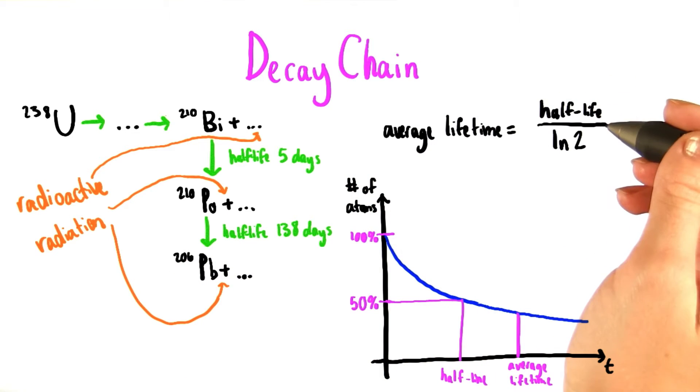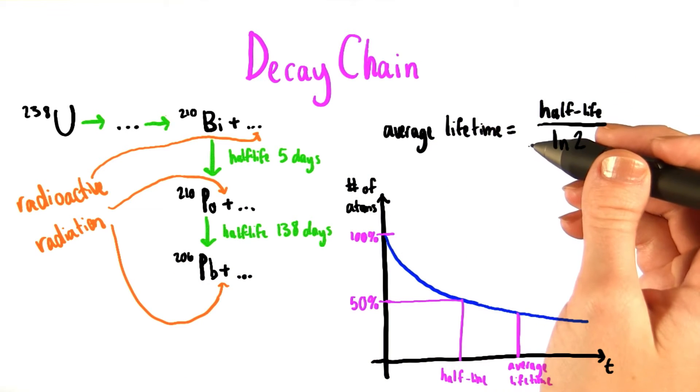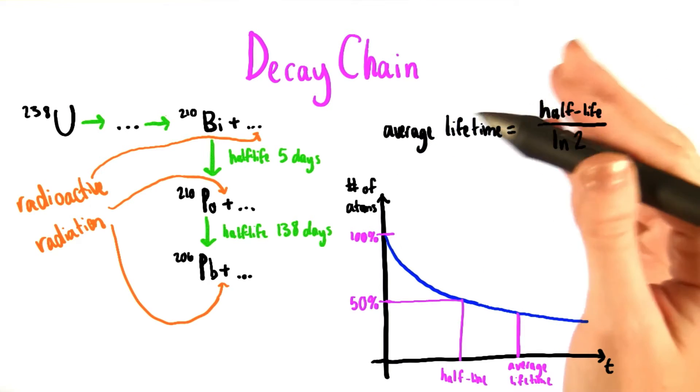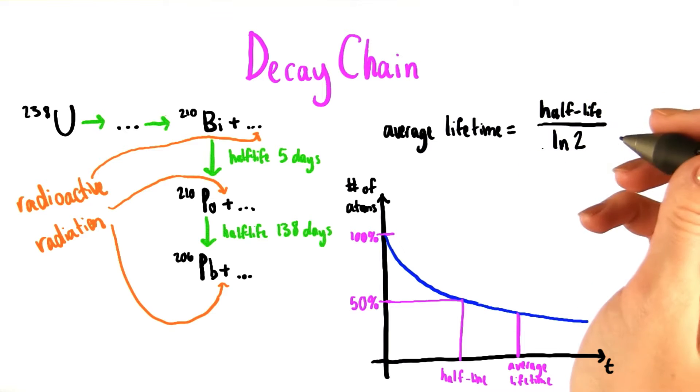And we can say that in general, the average lifetime of a given isotope is equal to its half-life divided by the natural log of 2. If you want to figure this out, you're welcome to, or you can just trust me that it's right.